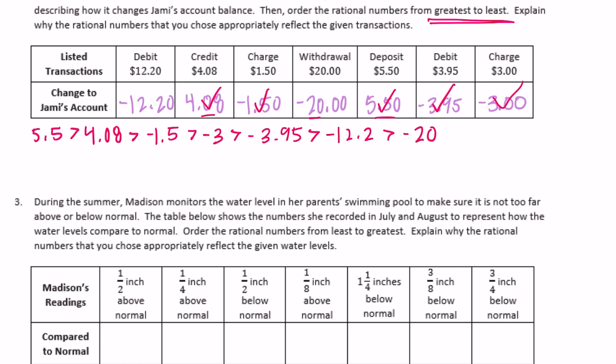Now let's explain why the words signified either negative or positive. Debit means negative, charge means negative, and withdrawal means negative. Credit and deposit describe positive transactions.